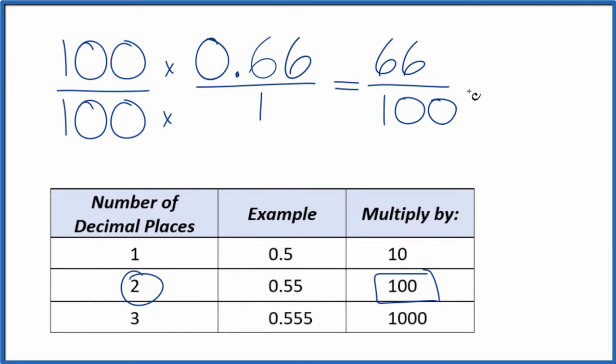Since these are both even numbers, let's divide them both by 2. 66 divided by 2 is 33. 100 divided by 2 is 50. And now we can't simplify this any further.